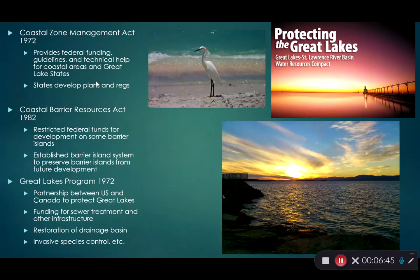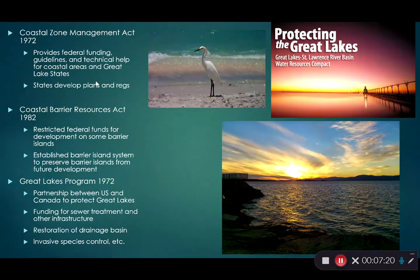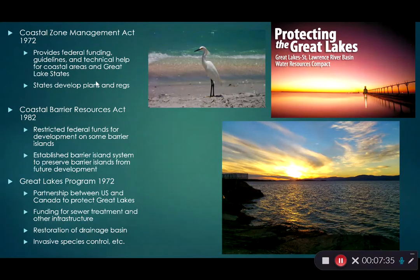The act also established the barrier island system to protect and preserve barrier islands. The Great Lakes Program of 1972 was a partnership between the US and Canada to protect the Great Lakes, recognizing that water flows across national boundaries. It provided funding for new sewer treatment and infrastructure, restoration of land in the drainage basin, and set policies to control invasive species — a bi-national effort to manage a shared resource.